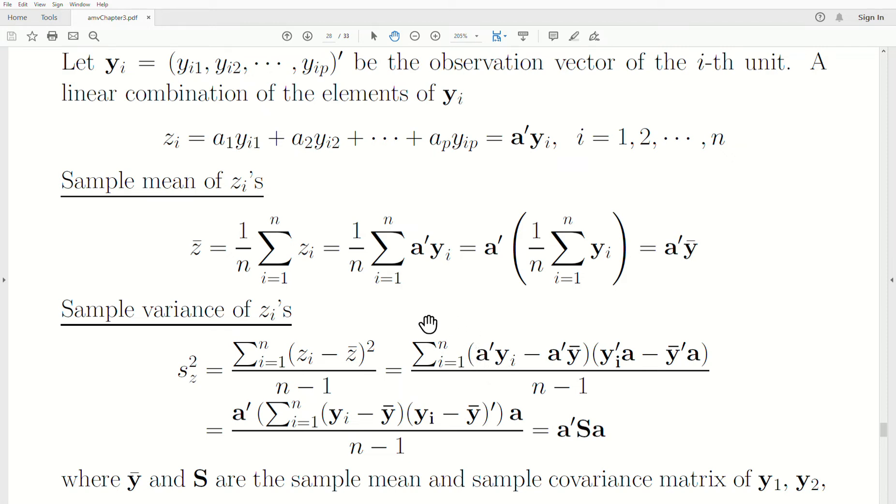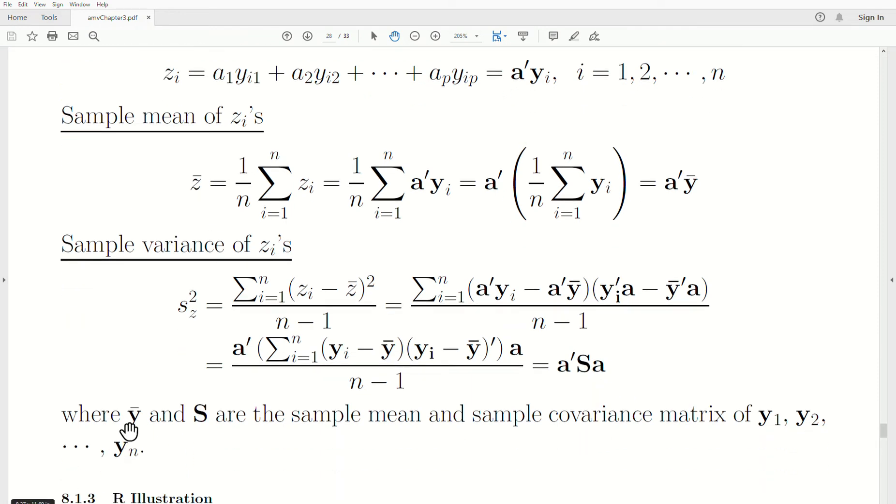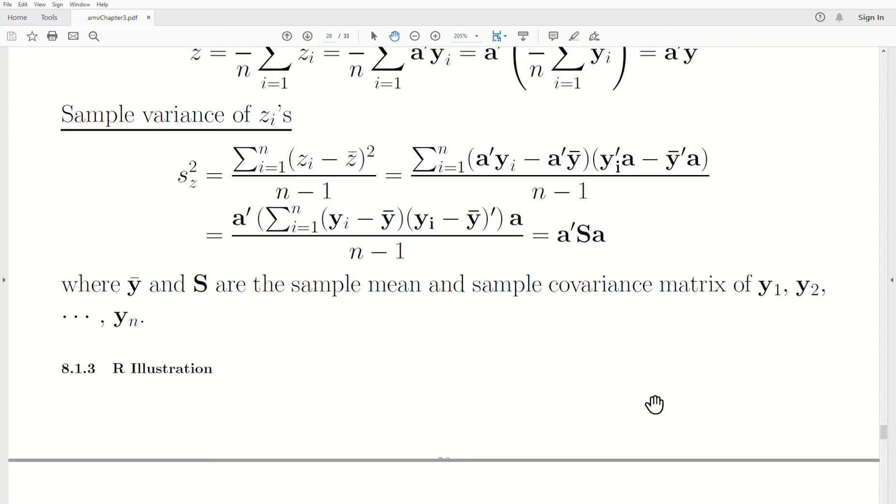And, then on this, in these parentheses, we write factor out an A. And, then it's constant, so it can come out of the sum. And, that's what this represents. But, this piece in the middle is just the sample covariance matrix. So, this A transpose S A is the sample variance of the Z's. Now, of course, Y bar and S are the sample mean and the sample covariance matrix of our sample Y₁, Y₂ to Yₙ.